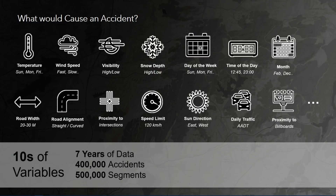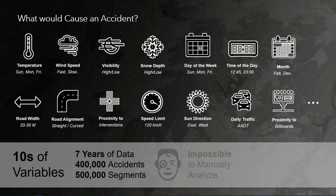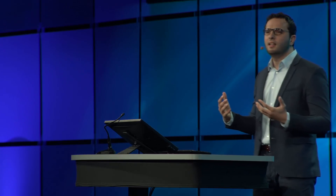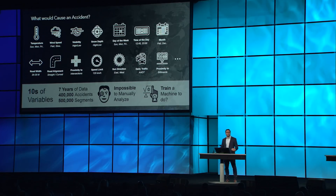There might be tens of variables, and the kind of data that we need to train our model is really large. We're talking about seven years of data, 400,000 accidents, 500,000 segments. It's nearly impossible for any human to analyze this manually and find the deep correlations and predict. But what about passing all of these data inputs to the machine to let it help us find the patterns and predict those risk segments?